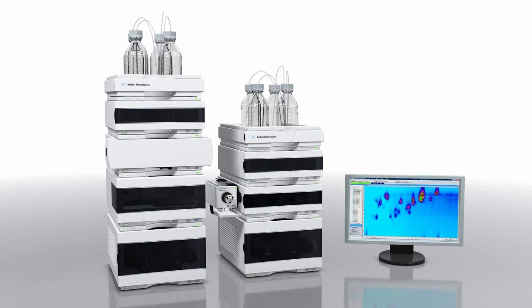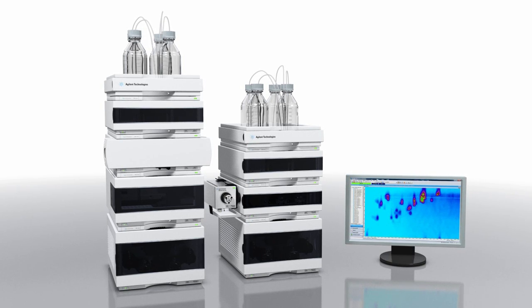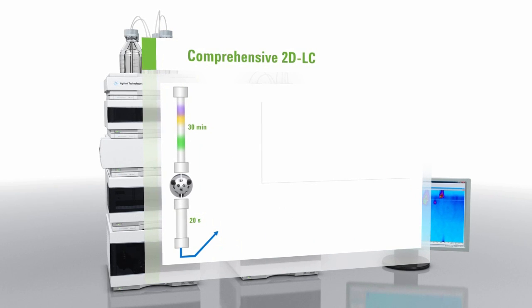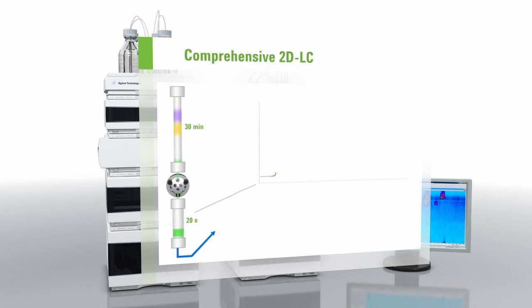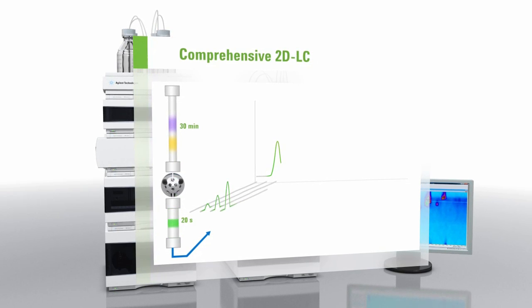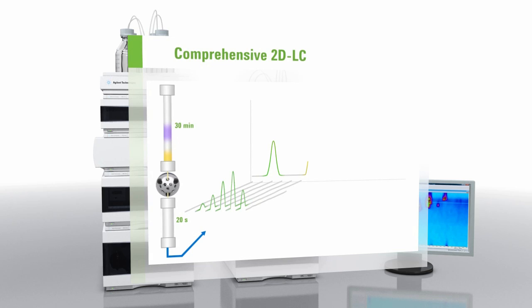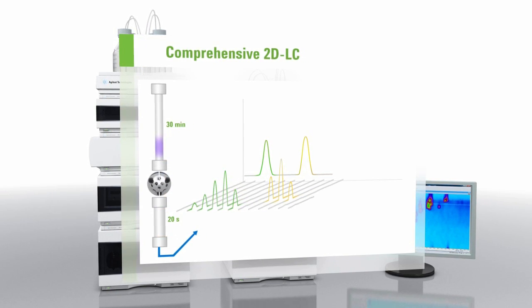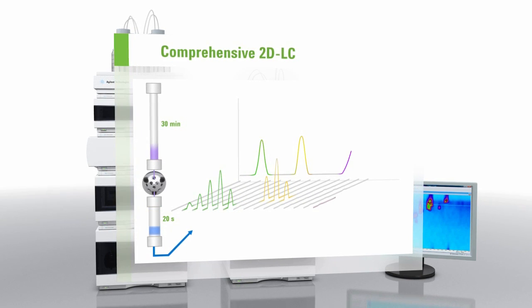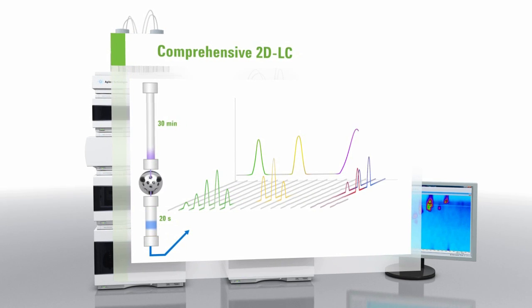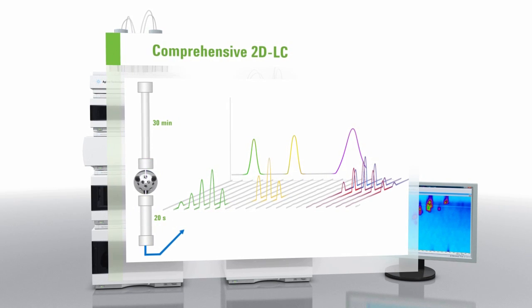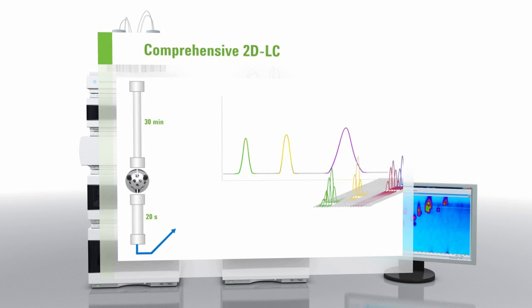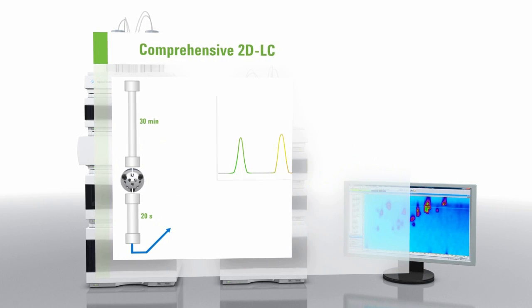Comprehensive 2D LC is the ideal solution for the most complex separation challenges. In comprehensive 2D LC, the complete effluent from the first dimension column is transferred to the second dimension column by means of a modulation valve with two loops. While one loop is being filled with the eluent from the first dimension column, the content of the other loop is analyzed on the second dimension column. The second dimension analysis uses fast gradients of 20 to 30 seconds, or even faster. After data acquisition, the partial chromatograms of the two dimensions are aligned to give a two-dimensional representation of the data.